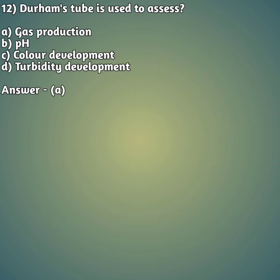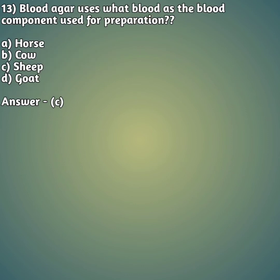Our twelfth question: Durham's tube is used to assess what? Option A: gas production, option B: pH, option C: color development, option D: turbidity development. The right answer is option A — Durham's tube is used to assess gas production.